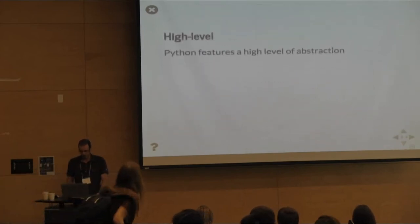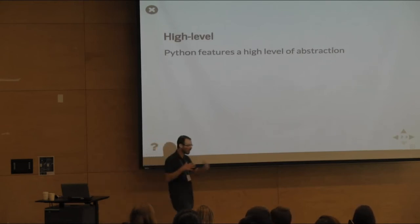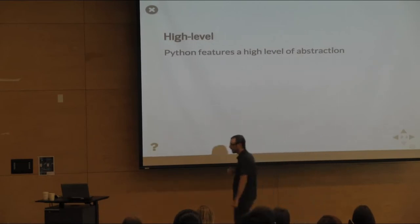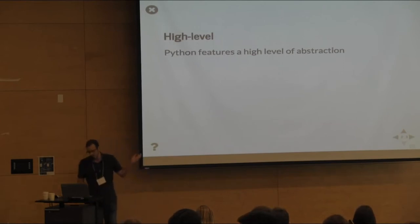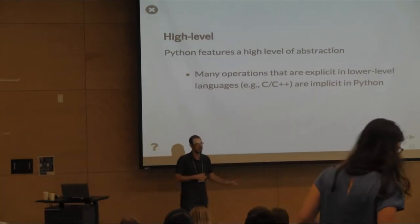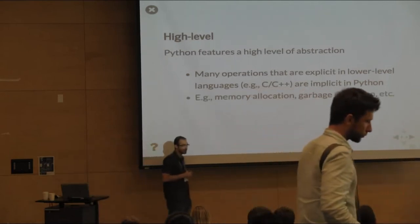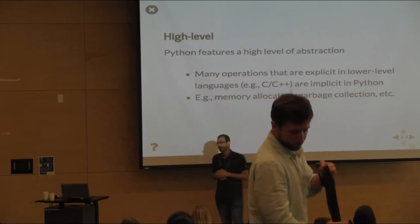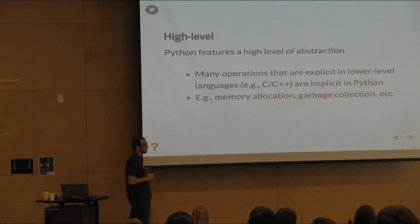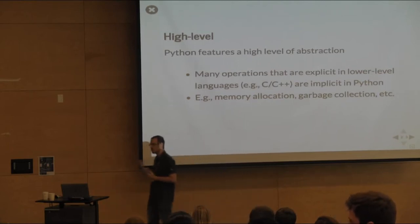Python is high level, meaning it has a high level of abstraction. Python code is much more abstract than lower-level languages like C or C++. There are lots of operations you have to make explicit in lower-level languages that are implicit in Python. For example, if you've had to initialize a variable in C, you have to decide how much memory to allocate — that's the kind of thing you don't think about in Python. The Python interpreter handles that for you.